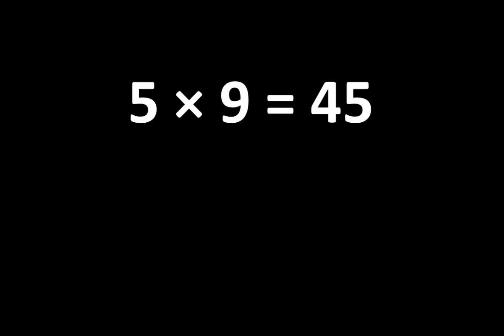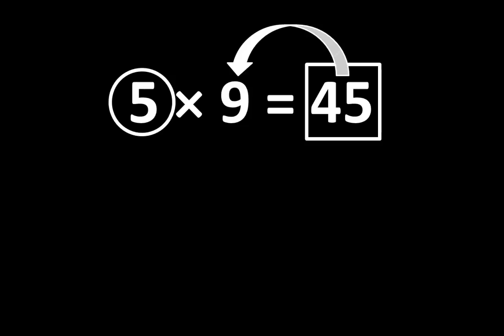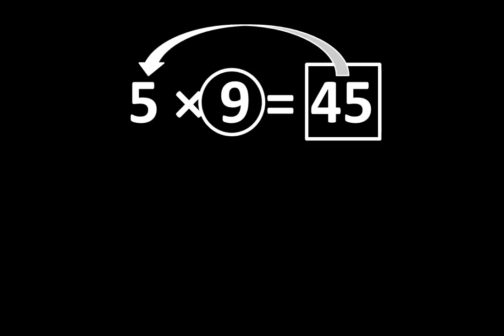It also means that if 5 times 9 equals 45, then 45 must be 9 times greater than 5 and 45 must also be 5 times greater than 9.